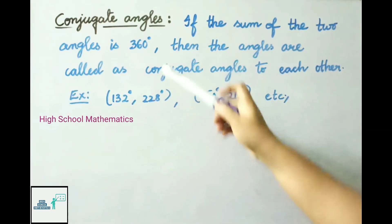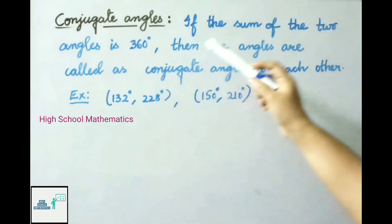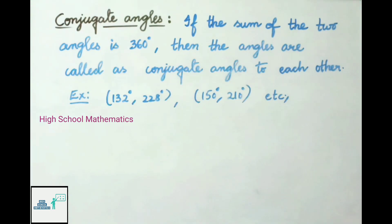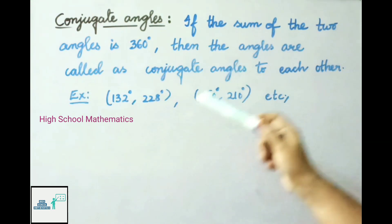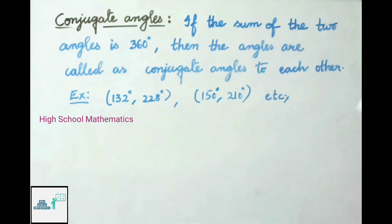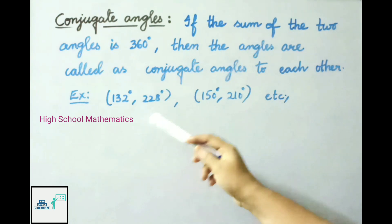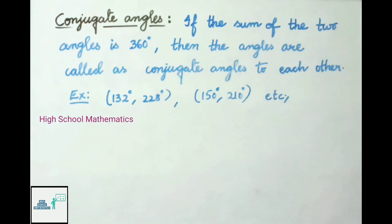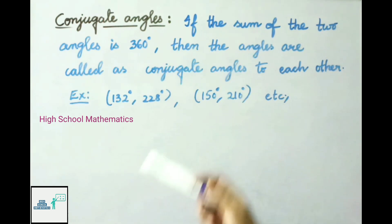Now what are conjugate angles? If the sum of two angles is 360 degrees, then the angles are called conjugate angles to each other. See example: 132 degrees and 228 degrees — the sum of these two angles is 360 degrees, so these two angles are called conjugate angles.